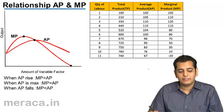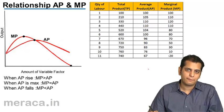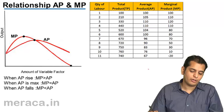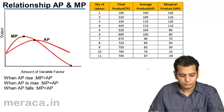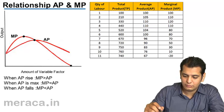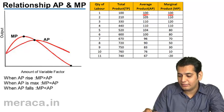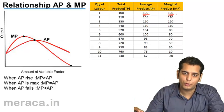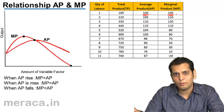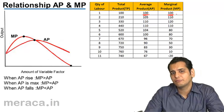Now, let's understand the relationship between AP and MP. AP is the average product, MP is marginal product. Now, if you take a close look, the first thing that you will notice is AP and MP start from the same point. When one labor is employed, both are 100. So they are starting from the same point.